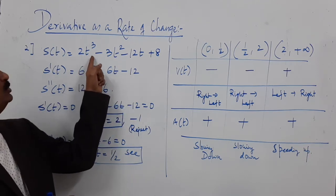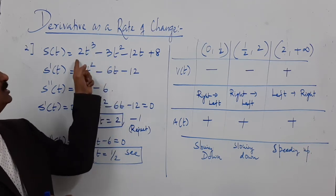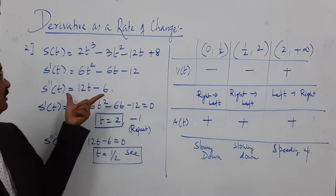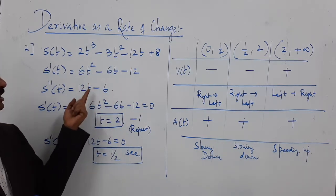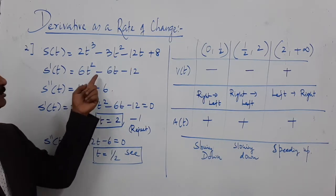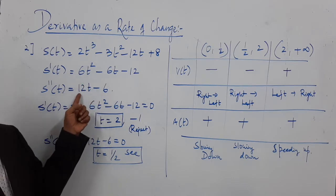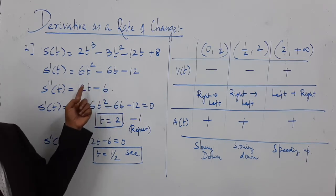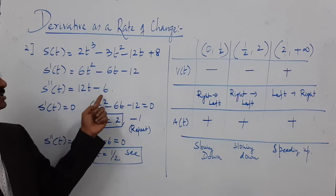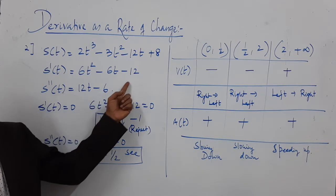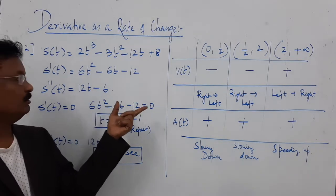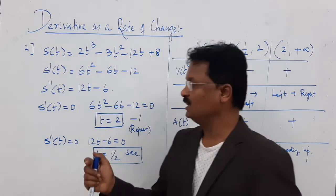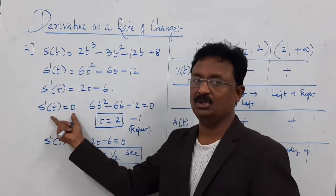Differentiation of 2t³ is 6t², minus 6t minus 12. Then find acceleration (second derivative): differentiating the velocity gives 12t − 6. So s double dash of t = 12t − 6.